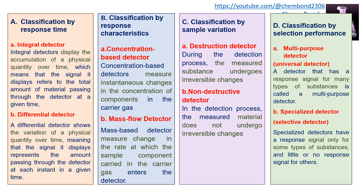Detectors are classified into different categories based on response time, response characteristic, sample variation, and selection performance. Classification by response time gives two categories: integral detector and differential detector. An integral detector displays the accumulation of a physical quantity over time, showing the total amount of material emerging from the column, while a differential detector shows the variation of a physical quantity over time at each instant.